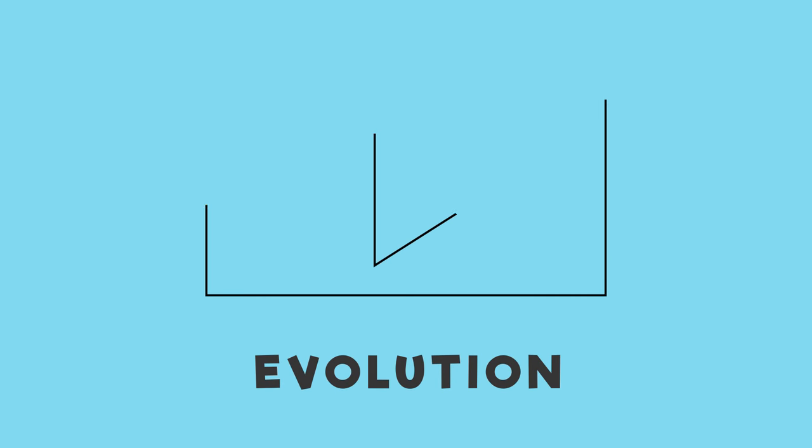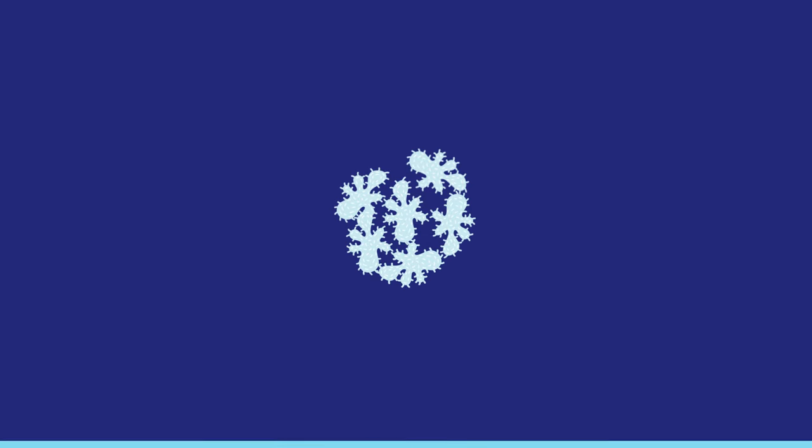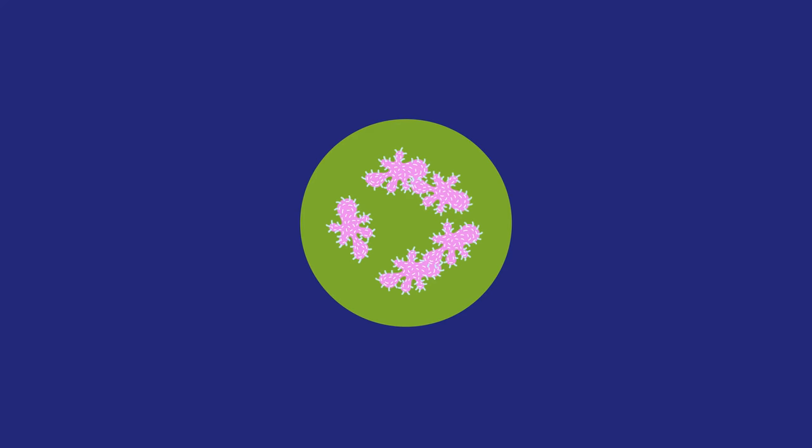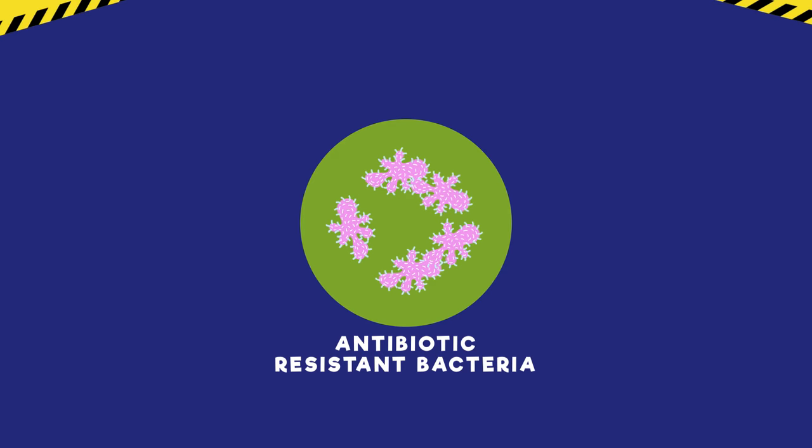In populations of bacteria, mutations often occur which, by chance, give an individual resistance to antibiotics. Because this is an advantage and bacteria reproduce so quickly, this mutation can spread very quickly throughout a population. This is how antibiotic-resistant bacteria evolve and is a problem for humans.